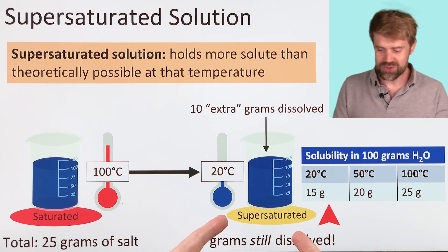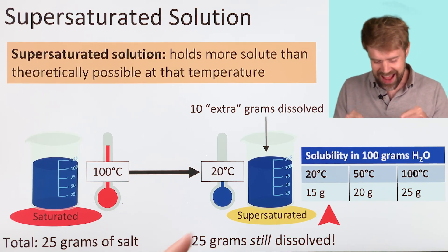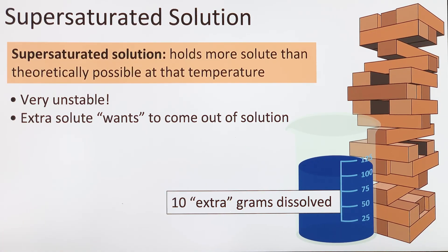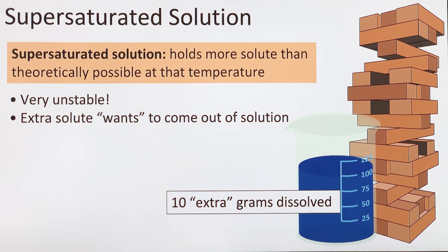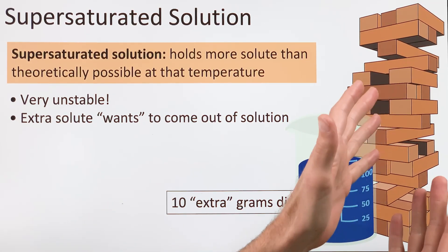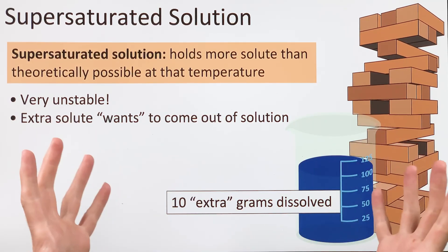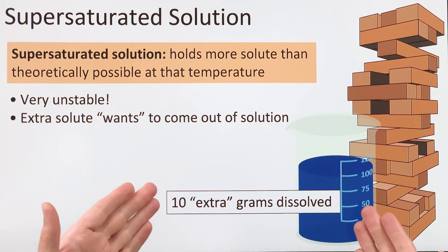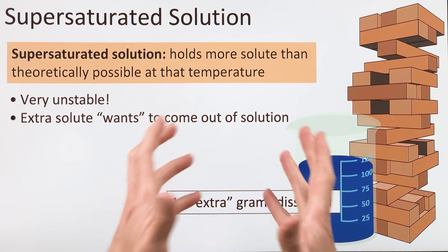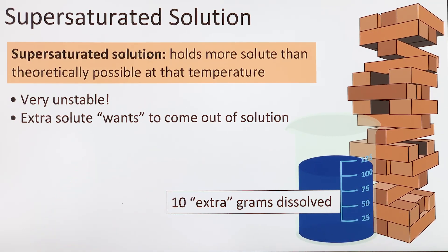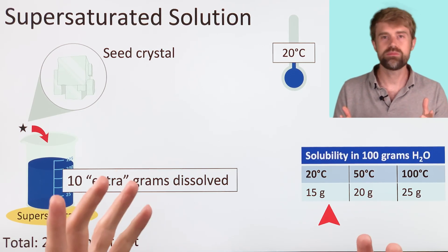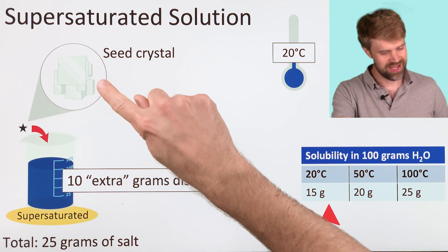The thing about supersaturated solutions is they're very unstable. All that extra solute just wants to come out of the solution. Here's a good analogy: did you ever play one of those games where you pull blocks out of a wooden tower? Sometimes you look at a tower that's teetering and think, how is that thing still standing? Even the slightest bump is going to bring it crashing down. That's a lot like a supersaturated solution — it's super unstable, and all that extra solute just wants to crash out of solution. It only takes the smallest push. The best way to make this happen is to add just a little bit more solute — sometimes even just one crystal is enough. We call this a seed crystal.